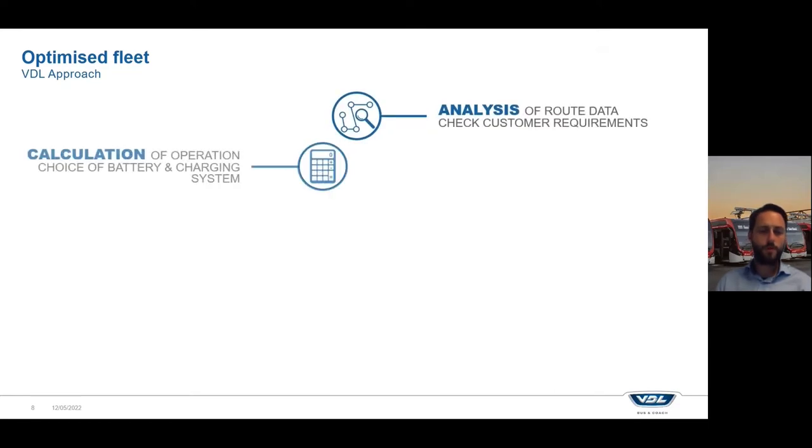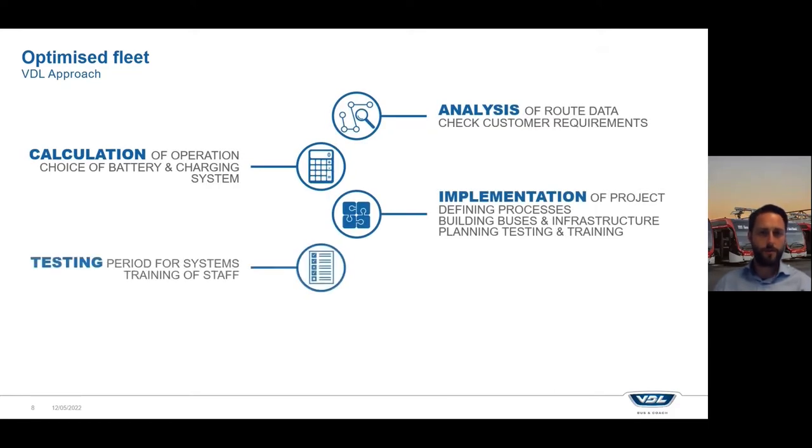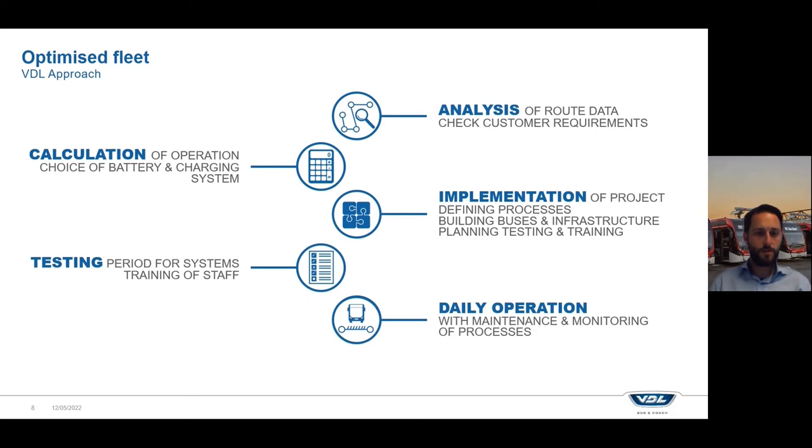Within VDL Bus & Coach, we always start with the analysis of the route data that the customer sends us to see what's the energy consumption, how to charge, the system specification. Then we calculate the operation that the customer can do, how the total day of operation looks like and how to optimize that. Then of course, we implement that solution, test it together with the customer and then daily operations start. And even after daily operation, you can think of many ways to optimize your fleet.